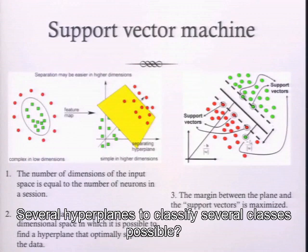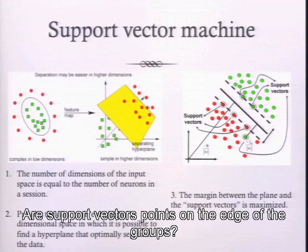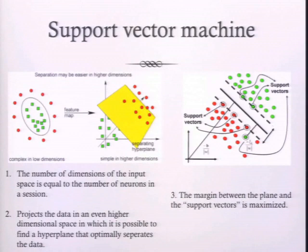A question was raised: can you define a general hyperplane for more than two classes — that is, can you conduct multi-class SVM? The quick answer is yes. I will be giving an example of multi-class SVM where I classify four different types of data.